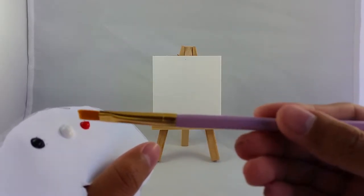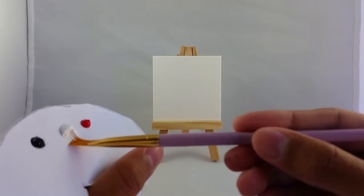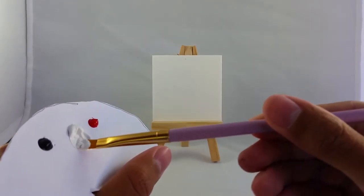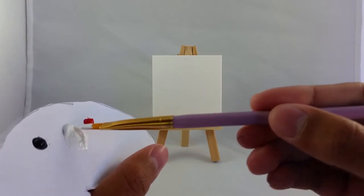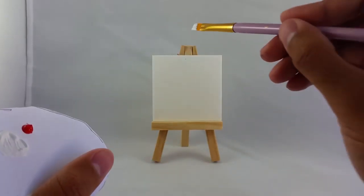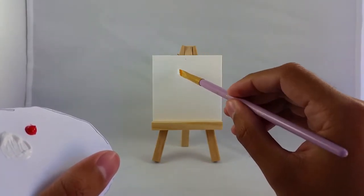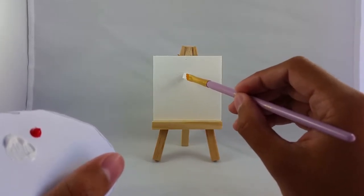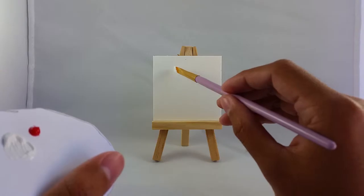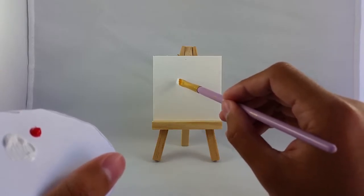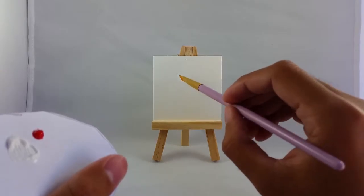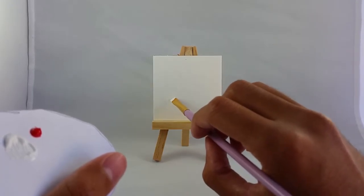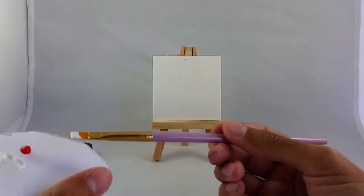So we're going to start with the spider. Actually, we'll start with the skeleton so we don't want to get the brush dirty. So we're using Titanium White. And I'm just going to start putting in the skeleton. You got to put a square head because everything is really square in Minecraft. And then the body here. And the legs.